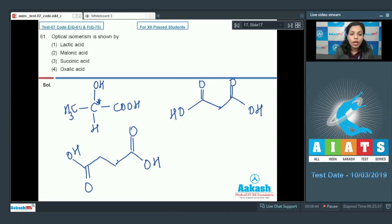Now in this case also there is no chiral carbon. And for oxalic acid if I talk about, oxalic acid is this. Again there is no chiral carbon and that's why these three are not showing optical isomerism. Only lactic acid is showing, so that's why option one becomes correct answer.